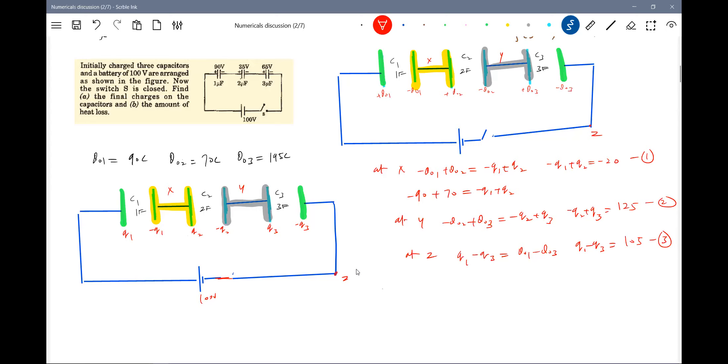We'll write one more loop equation and that is minus Q1 by C1 minus Q2 by C2 minus Q3 by C3. Solving 1, 2, 3, 4. We'll get the required answer.